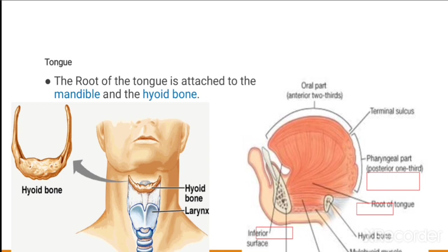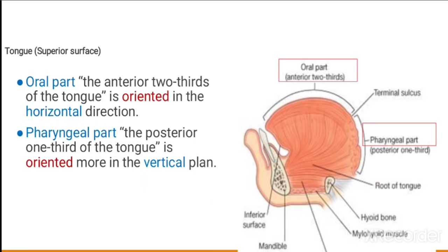The root of the tongue is attached to the mandible and the hyoid bone. In this diagram we can see the mandible as well as the hyoid bone. With the help of muscles, the tongue is attached to these two bones.